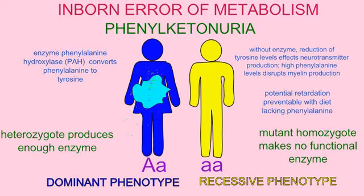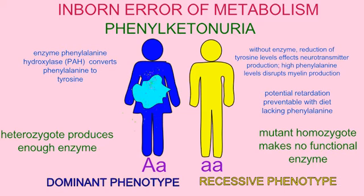However, if one were homozygous recessive for a mutation which prevented the production of functional enzyme, then tyrosine levels would be reduced and this would affect many tissues, including the brain's ability to make neurotransmitters such as dopamine.